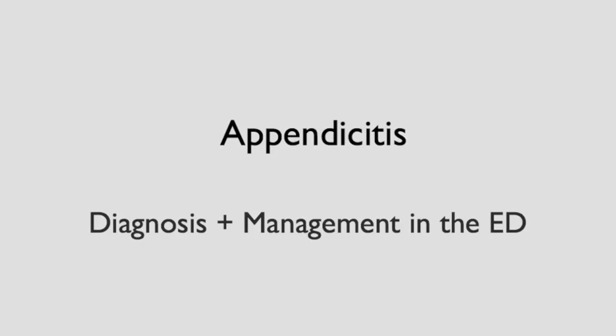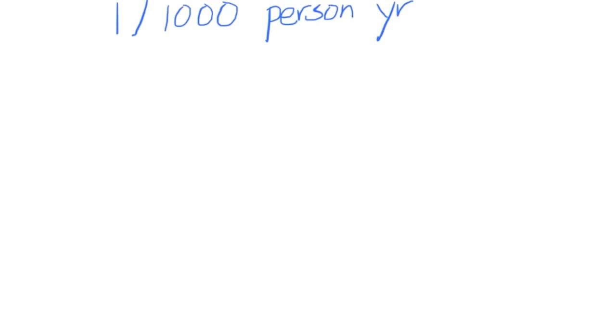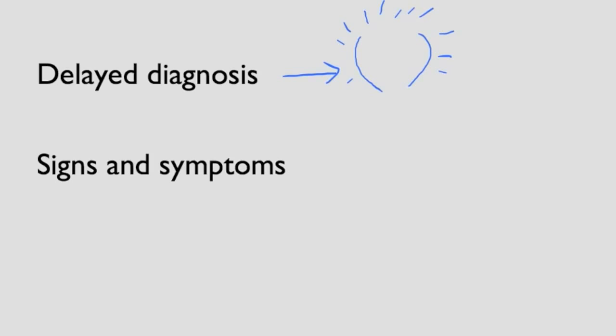Hello and welcome to your emergency medicine video. In this section we will talk about appendicitis. Appendicitis is common — it affects about one in one thousand people per year. If you're working in the emergency department even for a short while, chances are you will see a case or two. We want to learn to diagnose it because delayed diagnosis can lead to perforation, and that can lead to increased mortality.